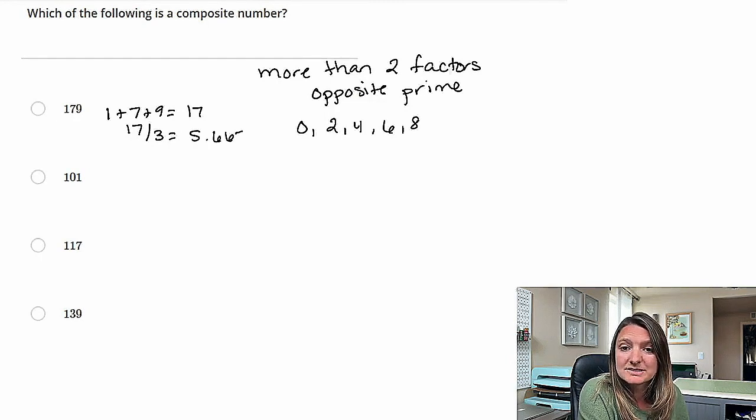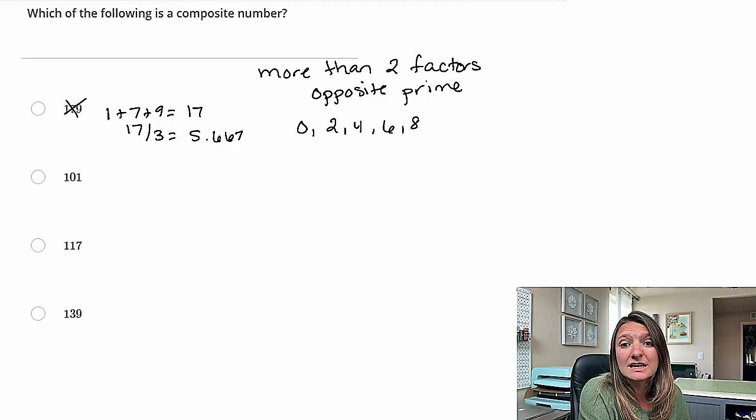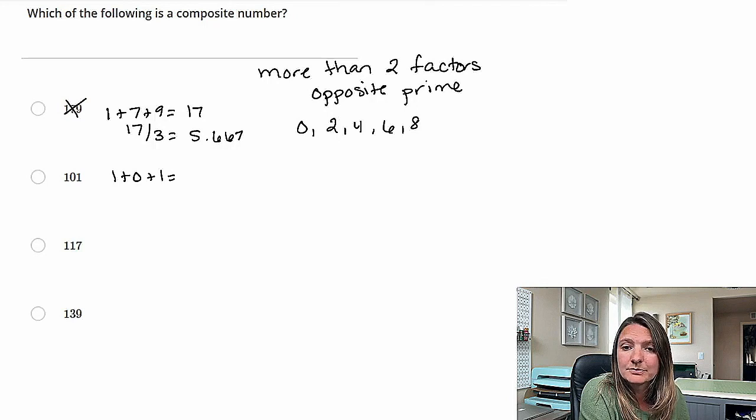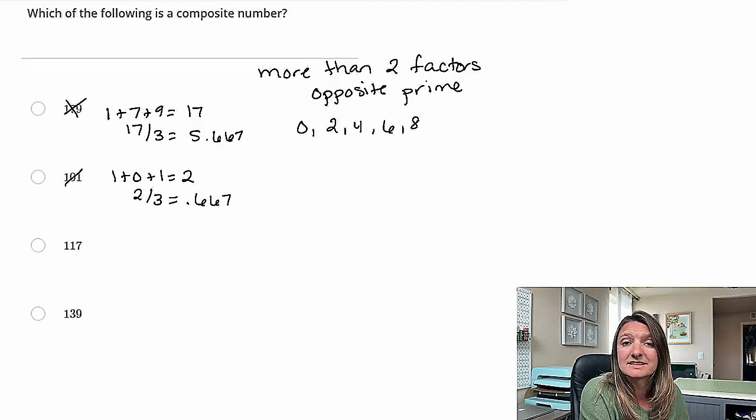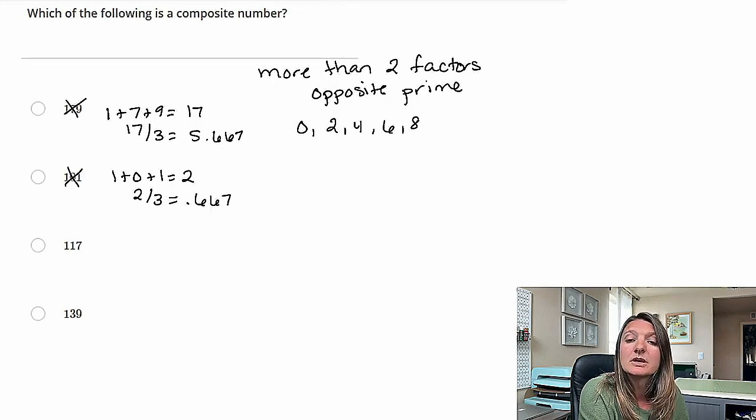So the first one, 1 plus 7 plus 9 is 17. 17 divided by 3 is not a whole number, so that is a prime number. 1 plus 0 plus 1 equals 2, and 2 divided by 3 gives us 0.667, which again is not a full number. So that is probably a prime number. So let's look at C.